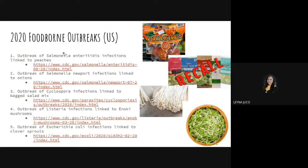During 2020, there were foodborne outbreaks in the United States. We had Salmonella enteritidis, a bacteria linked to peaches — the product was recalled from the market due to the presence of Salmonella enteritidis, causing a foodborne outbreak. We also had an outbreak of Salmonella Newport infections linked to onions, which also resulted in a foodborne outbreak.